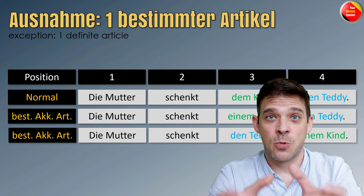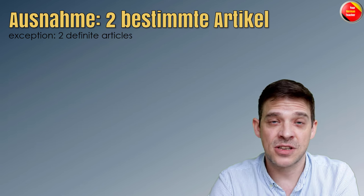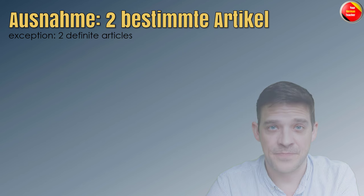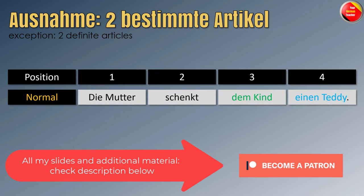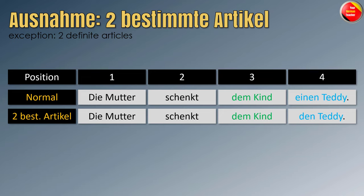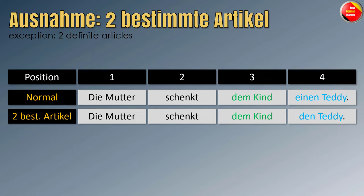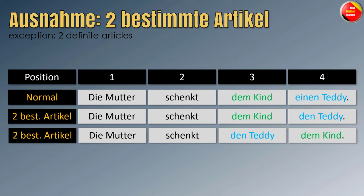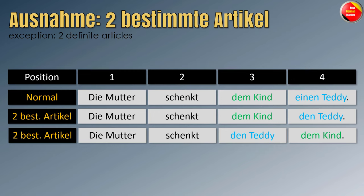What about if we have two definite articles? That's exception number two — Ausnahme zwei: zwei bestimmte Artikel. Die Mutter schenkt dem Kind den Teddy. You see we have two definite articles, but still the dative is in front of the accusative. But you can also say: Die Mutter schenkt den Teddy dem Kind. If the accusative object has a definite article, it doesn't matter if the dative is definite or indefinite — you can put the accusative before the dative object. But if the accusative object has an indefinite article, the accusative object always comes after the dative object.